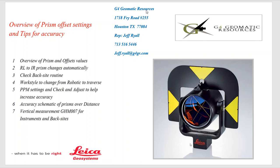Hello, this is Jeff Ryle from G4 Geomatic Resources in Houston. Today we're going to quickly go over the Leica prism offsets and third-party prism offsets in Captivate, and some tips for accuracy. We'll go over the different prism offsets, the values, how to put in a third-party prism, how to change from reflectorless to infrared, the check back sight routine, PPM settings, check and adjust, accuracy of prisms over distances, and the GHM007 for vertical height measurements.